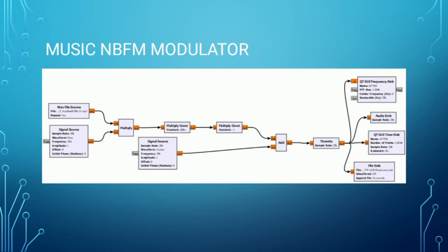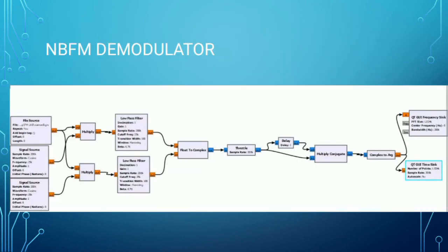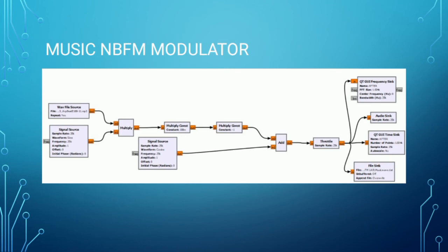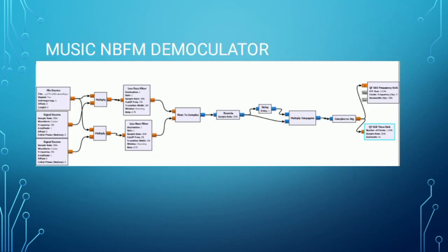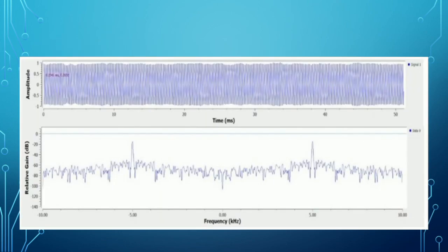Next, we use a music WAV file as the source. It's the same connection — we just change the signal source to a wave file source, with the same beta value to maintain narrowband frequency modulation. We get the output here, and this is our output for the narrowband frequency modulated signal. For the demodulator, the file source is the one from the previous procedure, using the same demodulator connections, and this is what we get.